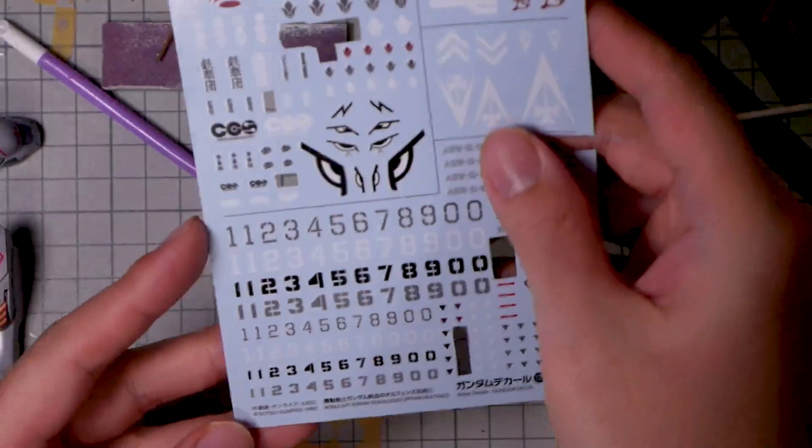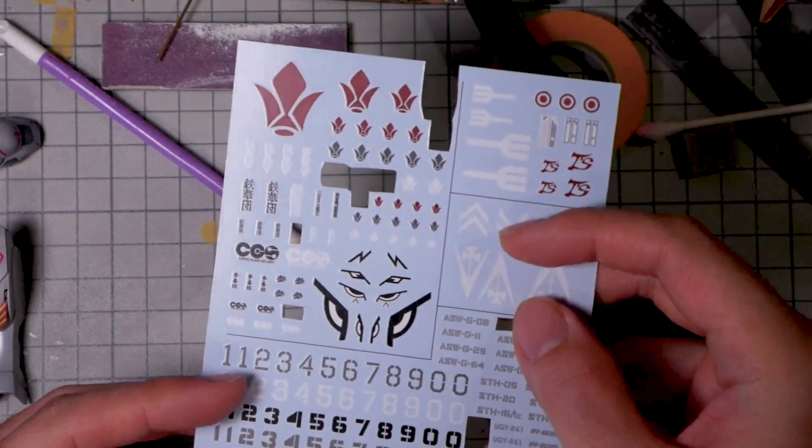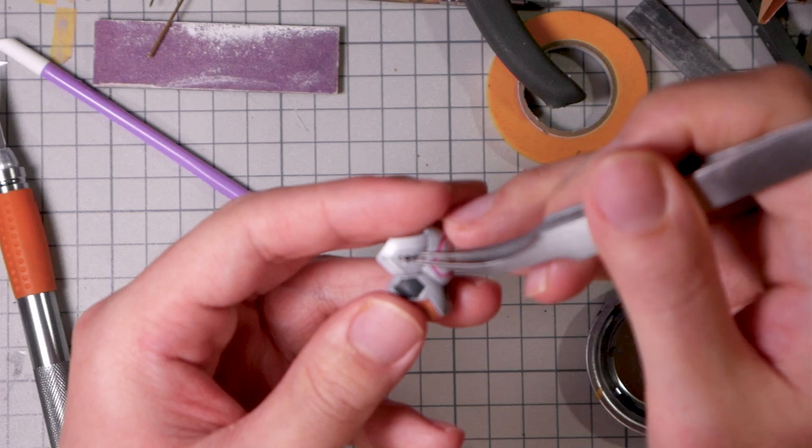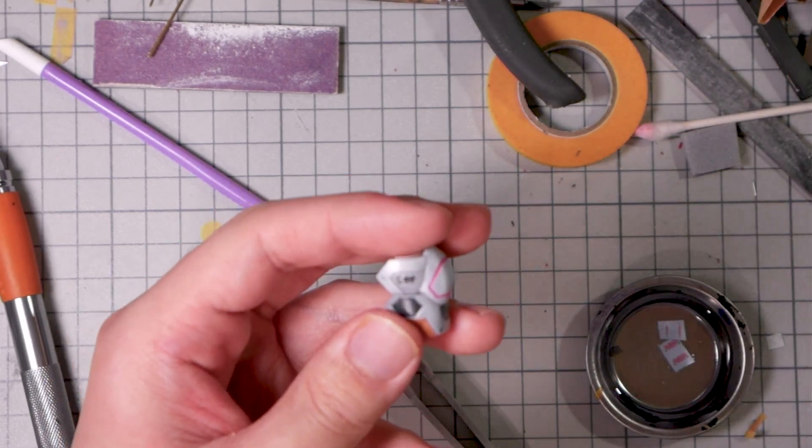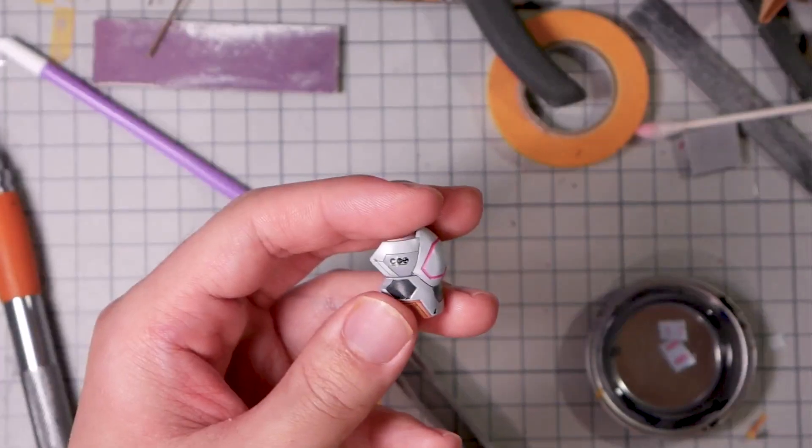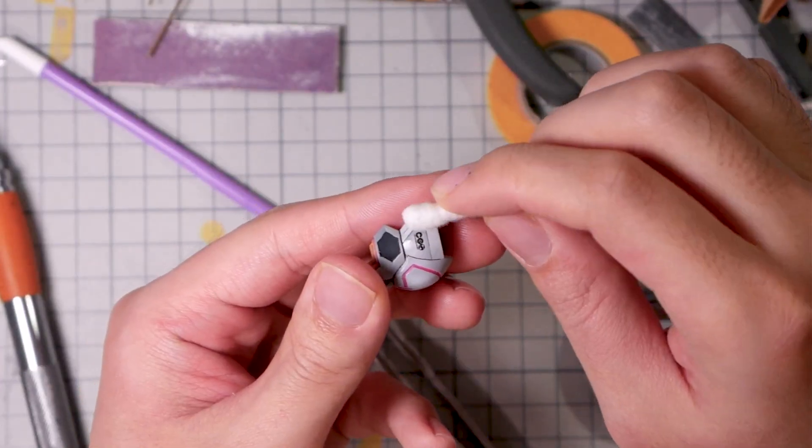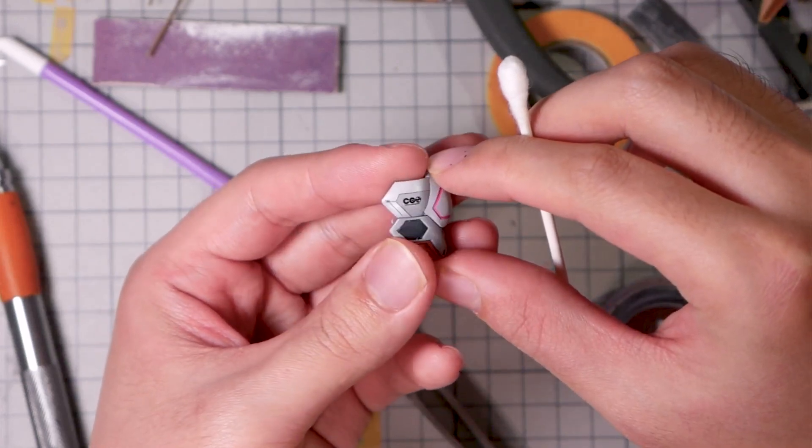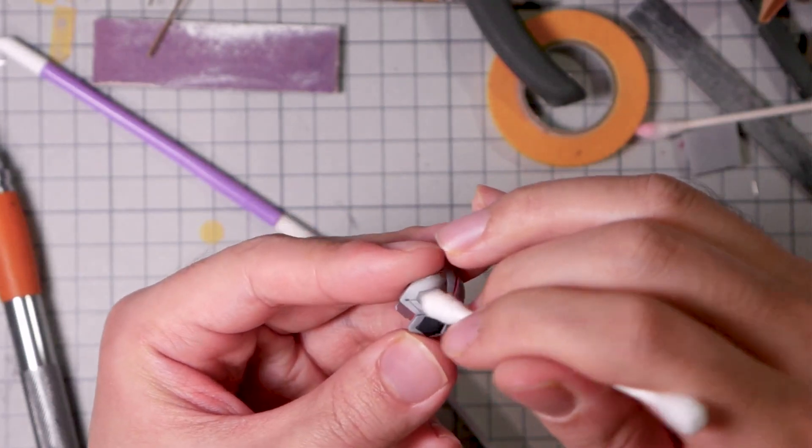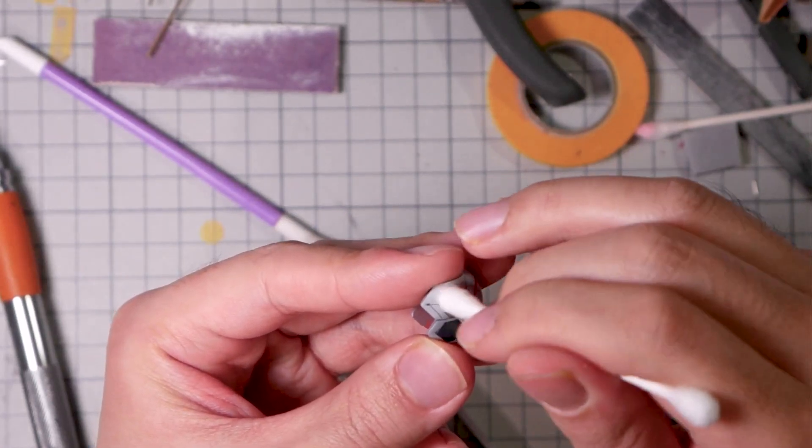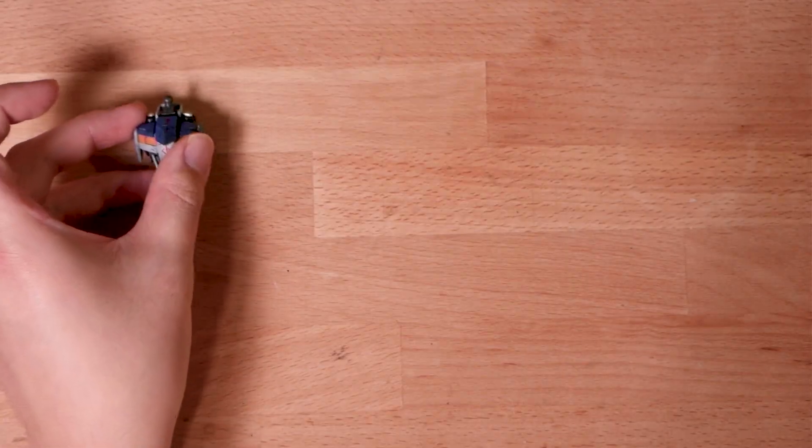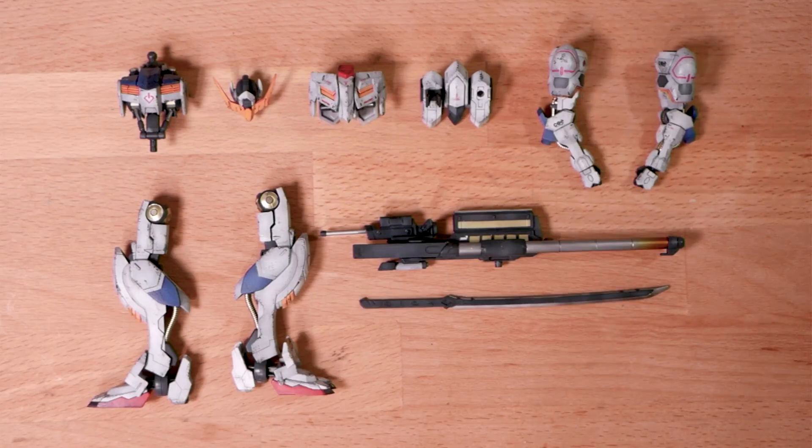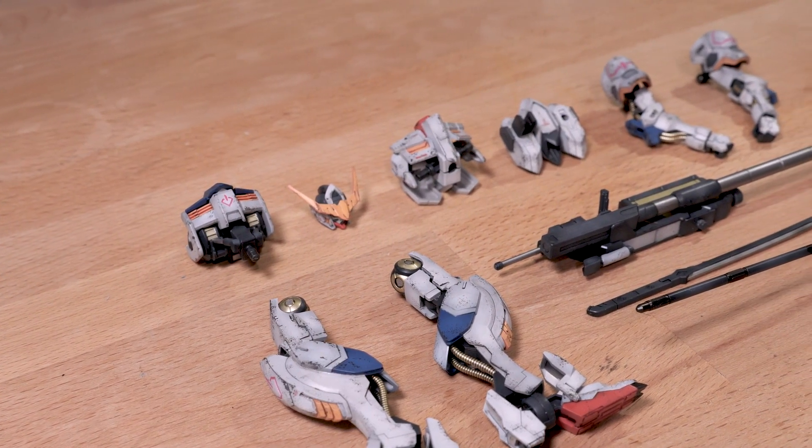For decals, I'm using the official Bandai IBO decal sheet for the big logos and HIQ parts decals for little warning messages. I really wanted to use some CGS decals to show that the Barbatos still had some CGS markings on it when it first left Mars, but I kind of messed up by adding one to the shoulder part since those parts are made by the turbine, so there was really no reason for these to have any CGS markings. I'm just going to have to live with that mistake. After that, I'm rounding it off with a little bit of simple paint chipping weathering, and that's about it for the kit.